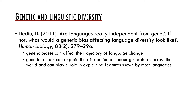This idea has been proposed by language geneticist Dan Dedieu, who argued that genetic biases can affect the trajectory of language change, and also that genetic factors can actually explain the distribution of language features across the world and can play a role in explaining features shown by most languages. One example of this relation may be linguistic tone. Many languages of the world are tonal and they have an uneven geographical distribution. Dedieu argues that there is a strong relationship between the distribution of tone languages in the world and the population frequencies of derived haplogroups of the genes ASPM and microcephaline. In other words, he claims that these two genes may present a genetic bias which affects the use of linguistic tone in language.